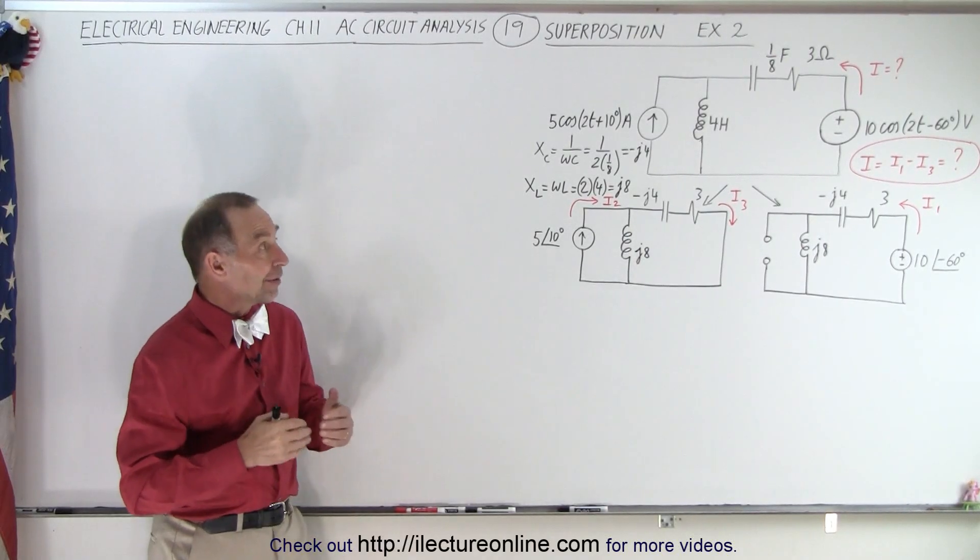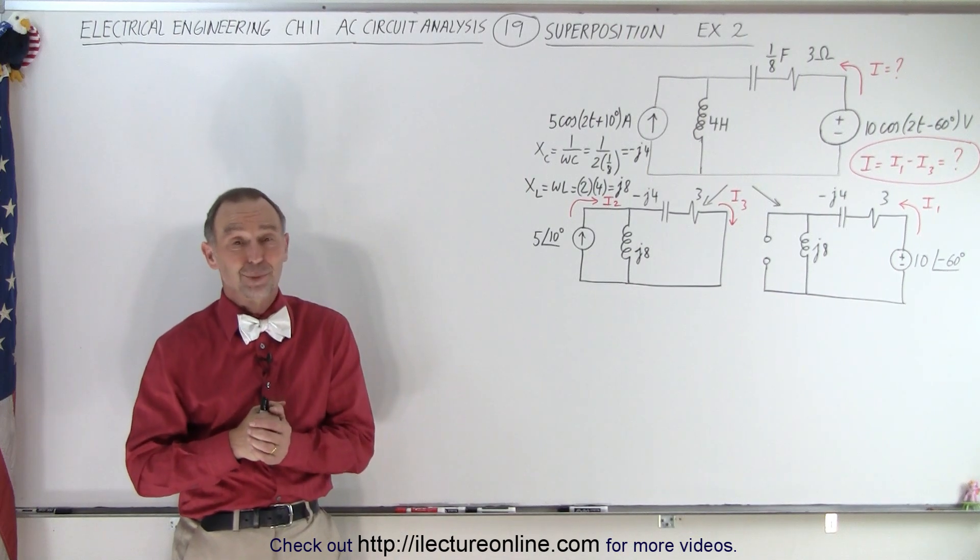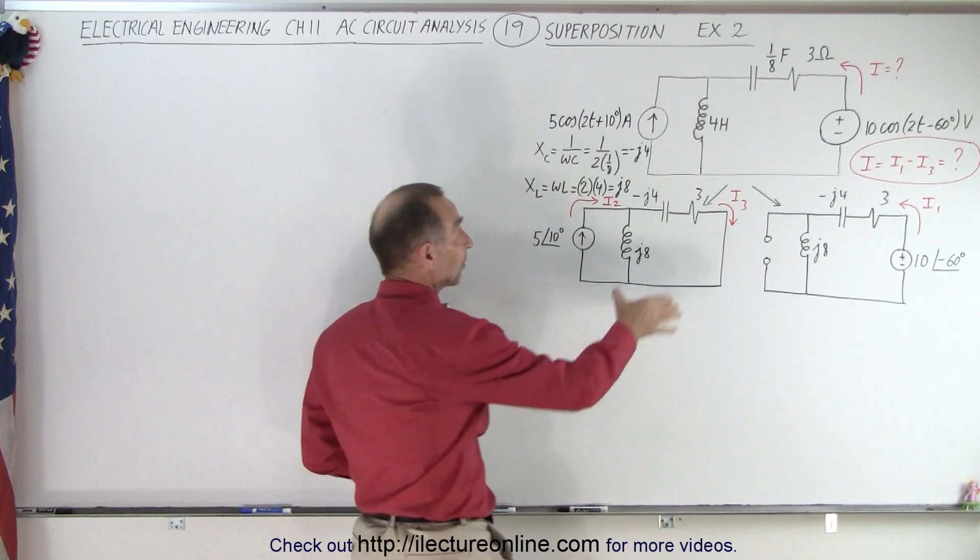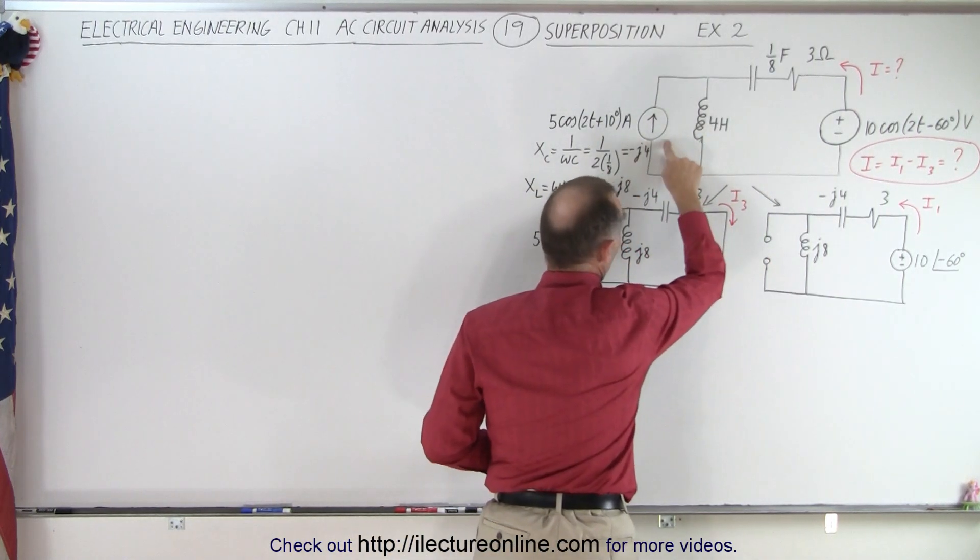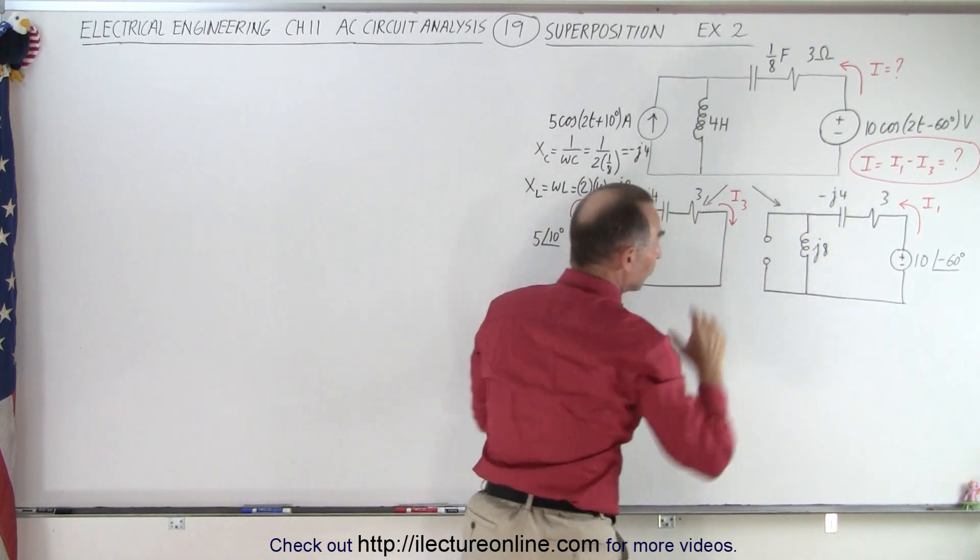Welcome to ElectronLine. Here we have another circuit that we're going to solve with the magic of superposition. What do we mean by the magic of superposition? It means that we can take a single circuit which has multiple sources, a current source and a voltage source, and separate it into two separate circuits.